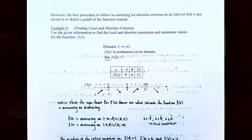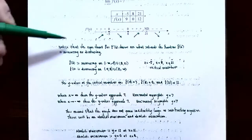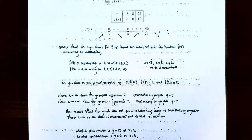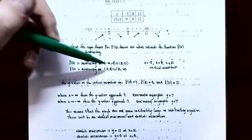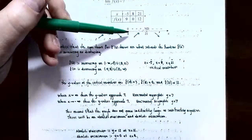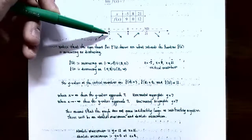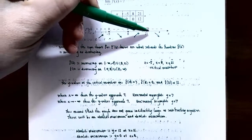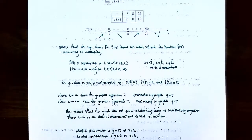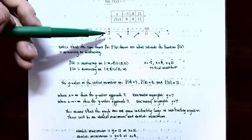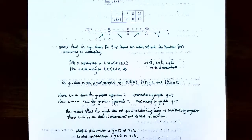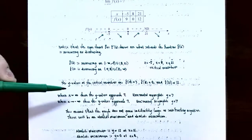From the sign chart, f(x) is increasing on (−∞, −5) and on (8, 21), and decreasing on (−5, 8) and on (21, ∞). This tells us we have three critical numbers: x = −5, x = 8, and x = 21, where the derivative is zero or undefined. We want to find the y-values at each of these critical numbers.